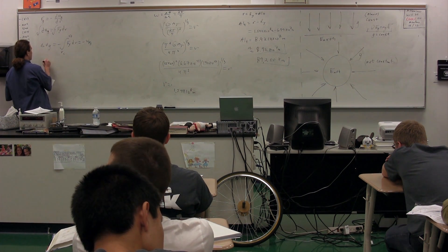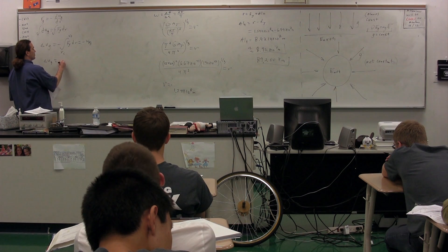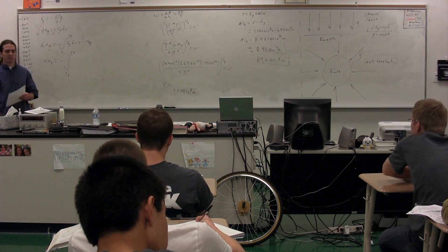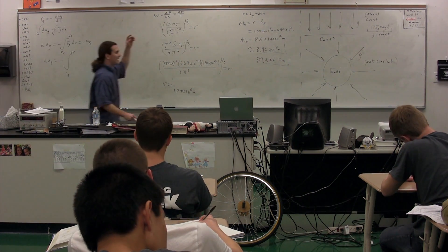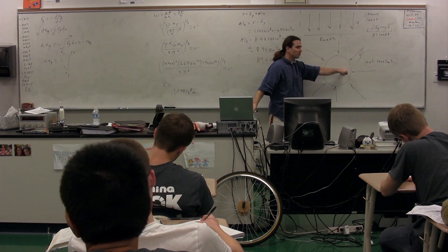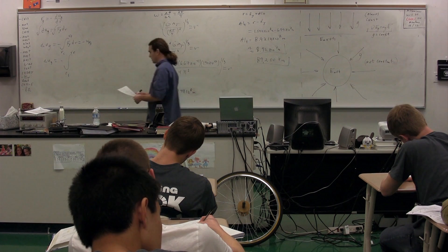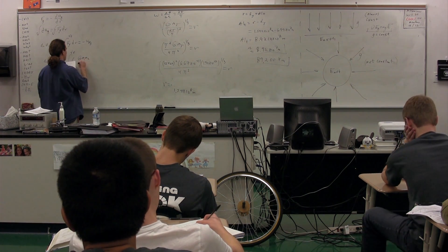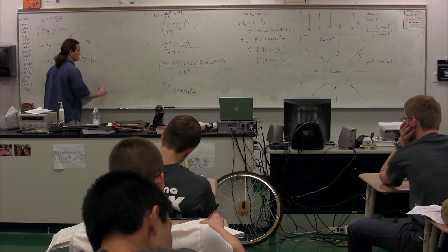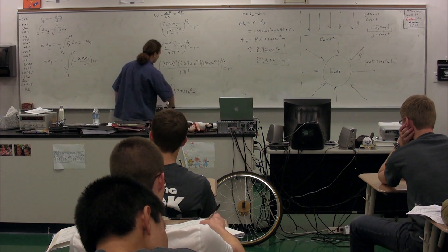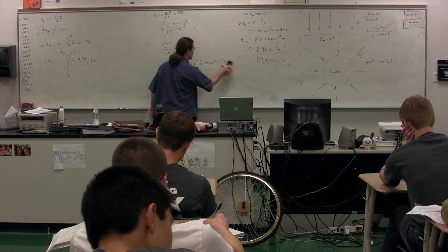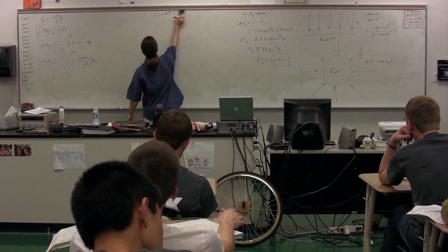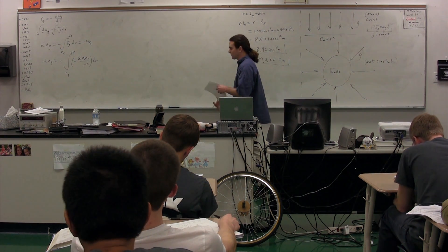The change in gravitational potential energy is equal to the negative of the integral from position initial to position final of the equation for the force of gravity. We have an equation for the force of gravity in a non-constant gravitational field, which is going to be equal to negative big G times M1 times M2 over R squared with respect to position. The negative goes back to using the vector form of the equation, so we need that negative in here.